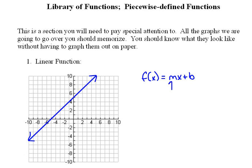Remember that if your m, which is your slope is positive, then it rises from left to right. If your m value or the slope is negative, then it will be going down from left to right.